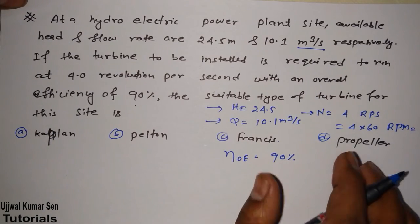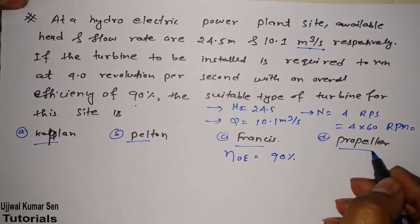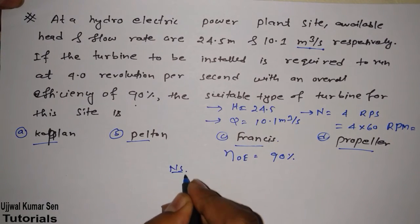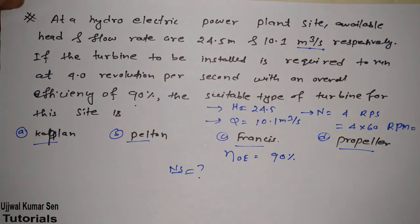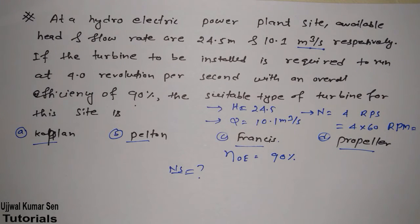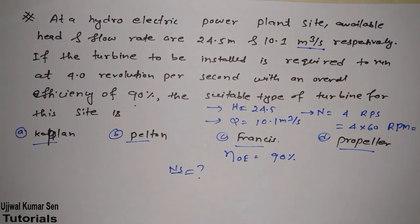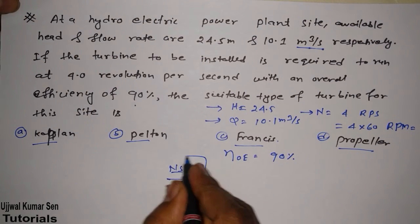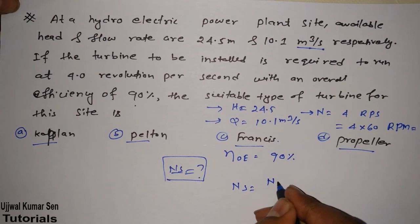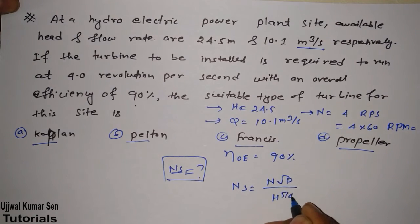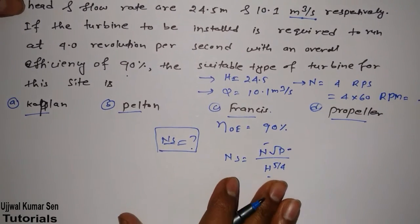To find the turbine type, we need to calculate the specific speed Ns. We cannot determine the turbine type from head alone in this case. The formula for Ns is N times the square root of P, divided by H to the power 5/4. We have N and H, but we don't have P yet, so first we need to find the power P.